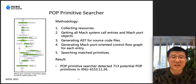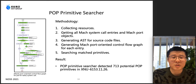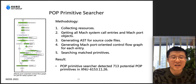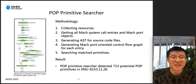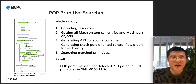The searcher analyzes XNU source code to generate a list of POP entry points, then generates a Mach port-oriented control flow graph for each entry. Through the graph, we can identify kernel functions executed by a Mach system call and Mach port objects affected during execution. For each path, the POP primitive searcher classifies code paths based on primitive models. If the path has expected Mach port objects and matches the code pattern, it is marked as a potential primitive. In our experiment, the searcher detected 713 potential POP primitives in the XNU source code.